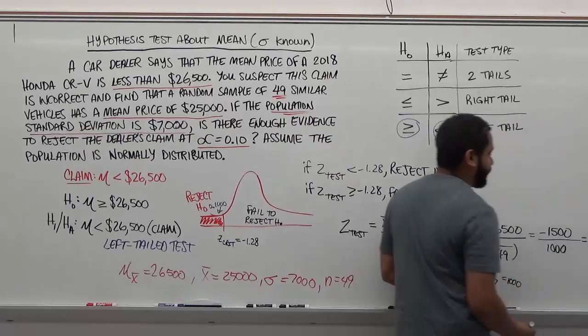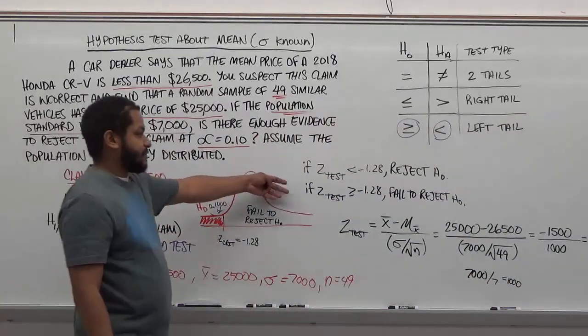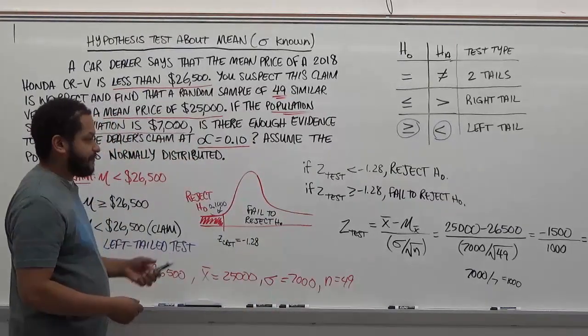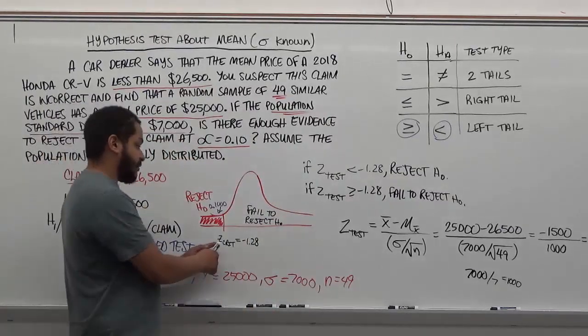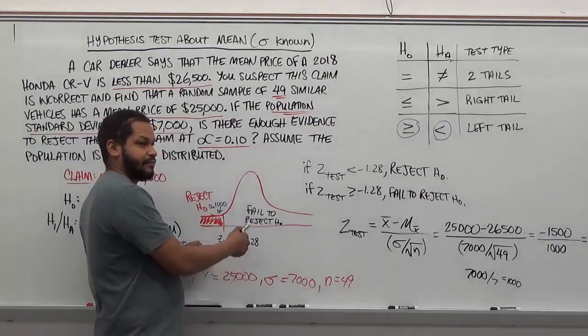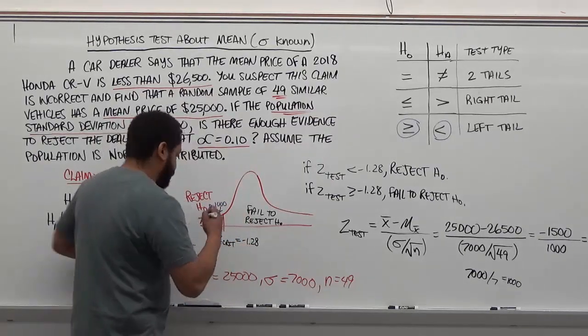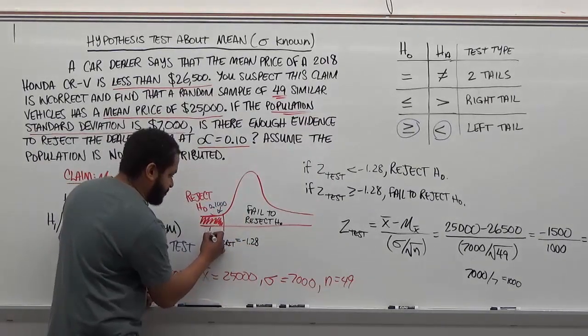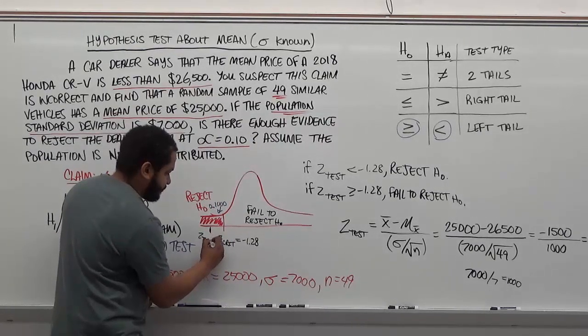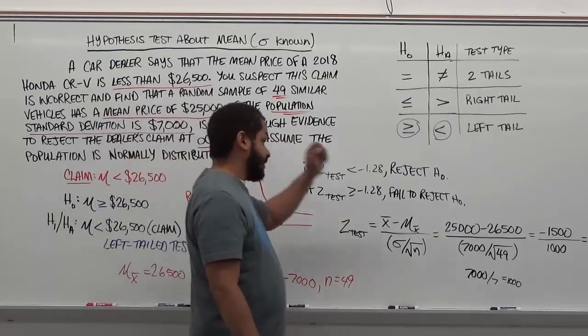We're going to add a zero here for the sake of the z-score, so negative 1.50. Where does negative 1.50 land? Is it before or after negative 1.28? It's going to be before, because it's less than negative 1.28. So our z-test statistic falls in the rejection region. For this reason, we're going to reject the null hypothesis.